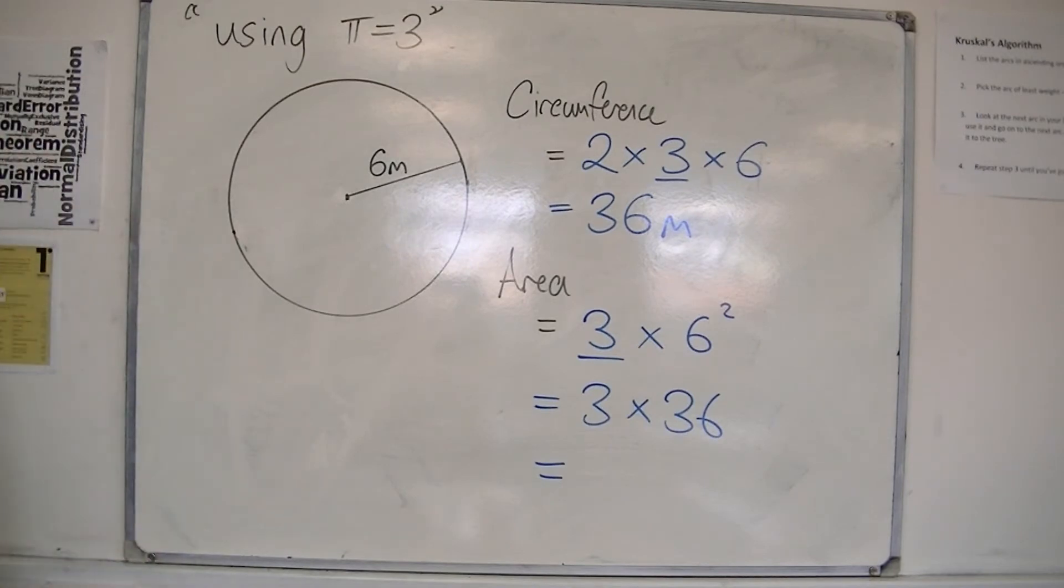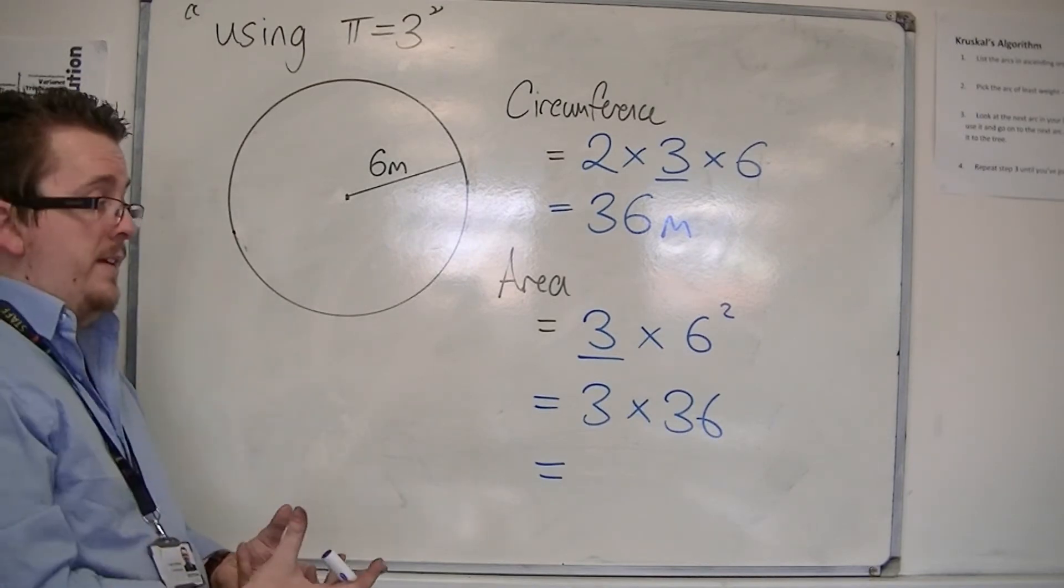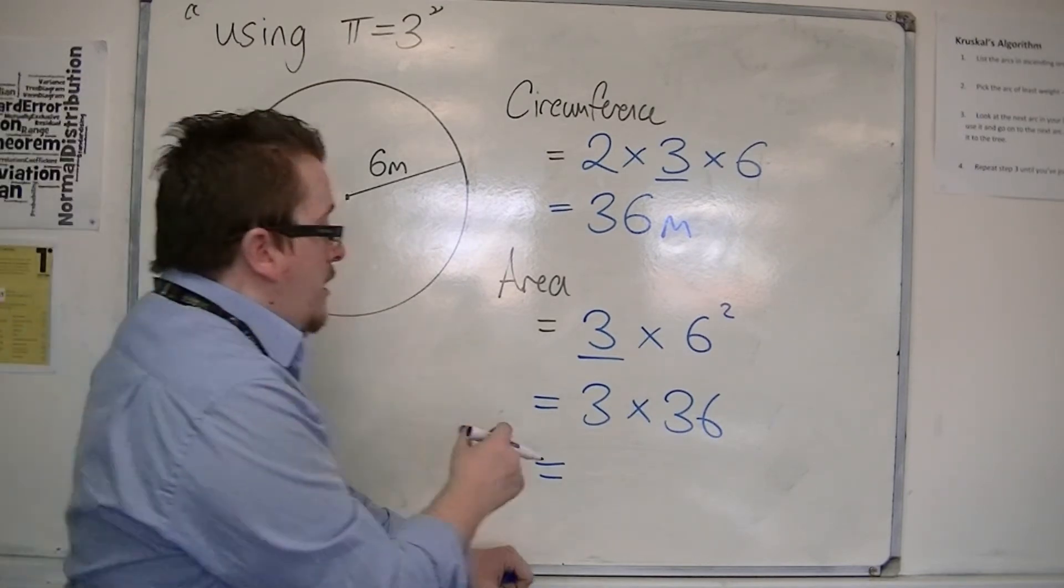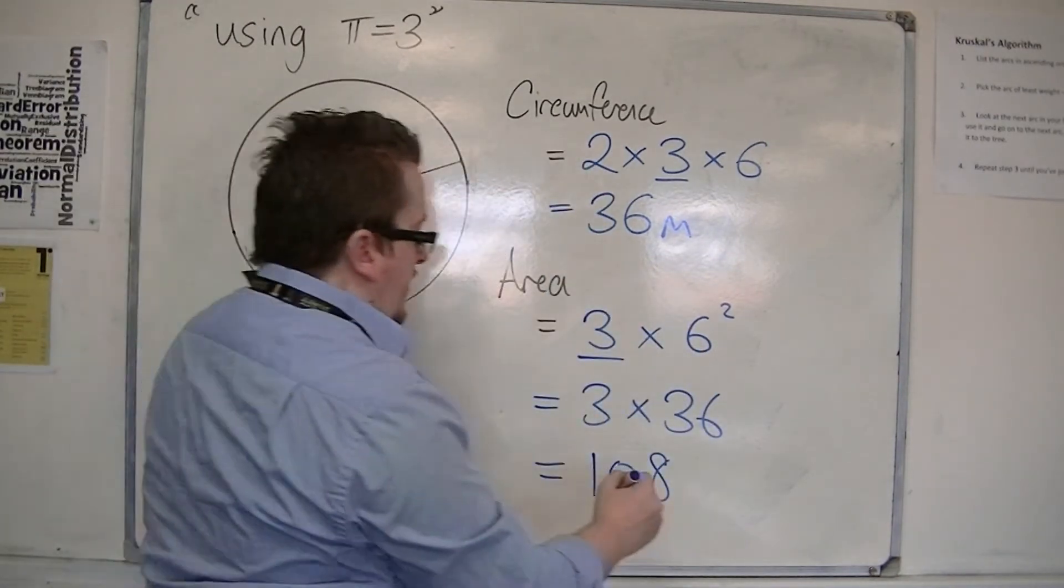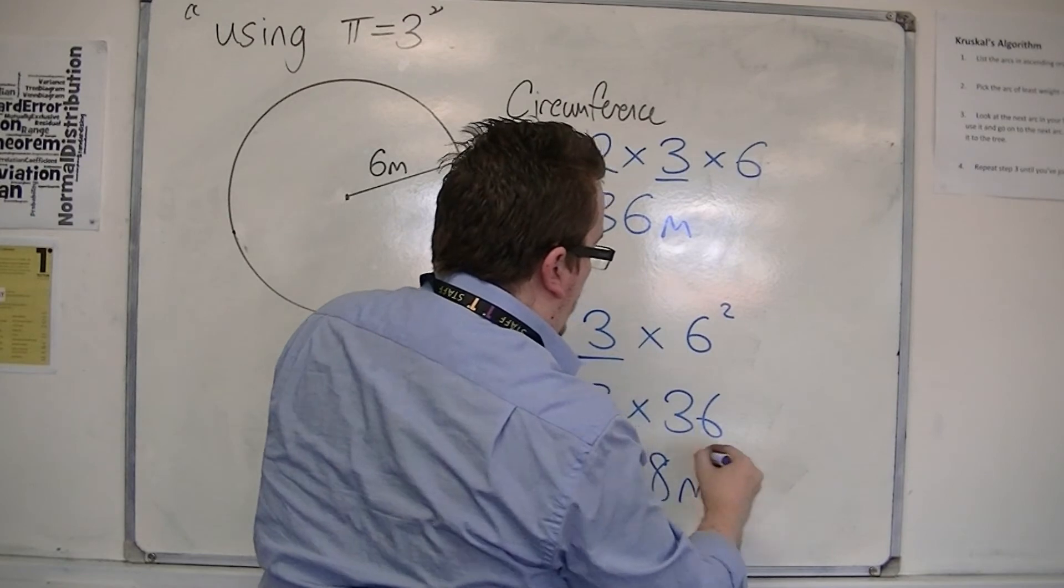So 3 lots of 36, 3 lots of 30 is 90, 3 times 6 is 18, so that's 108. And because we're looking at the area, we're in meters for the radius, so meters squared.